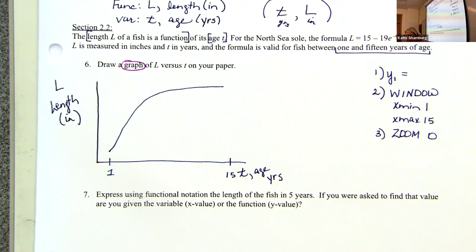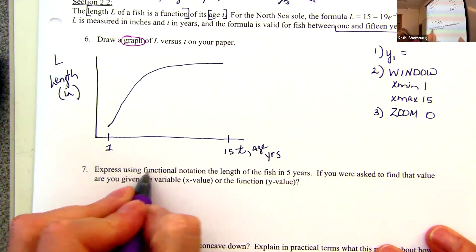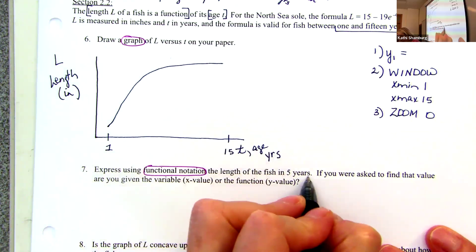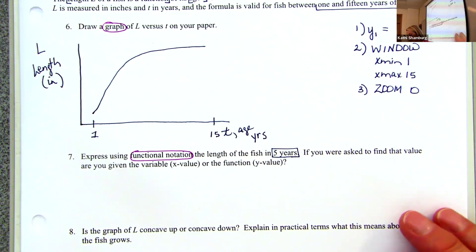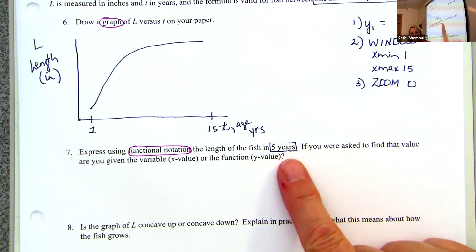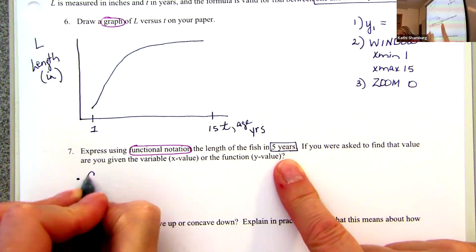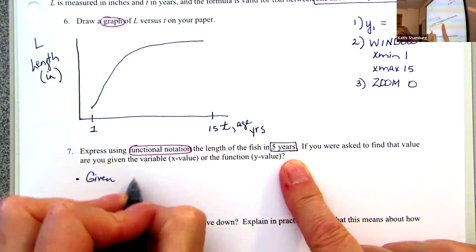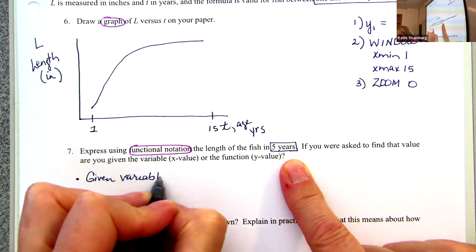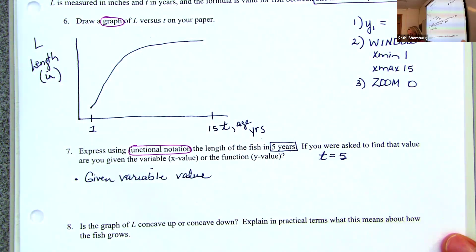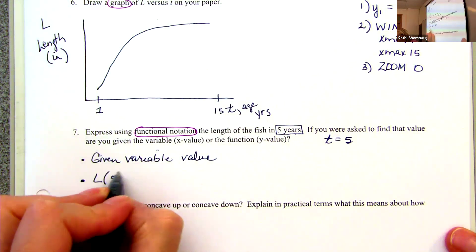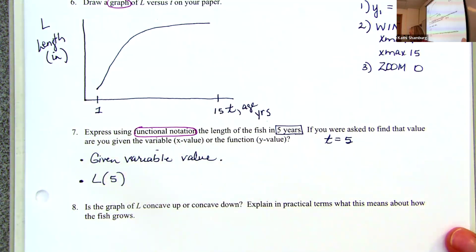Express using functional notation: the length of the fish in five years. If you were asked to find that value, what are you given? Years is the variable—so we're given the variable value T equals five. Written in functional notation, that would be L at five. Is it asking me to calculate anything? No, so that's all it asks, but you need to give me both of those.